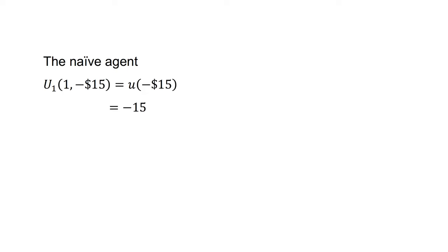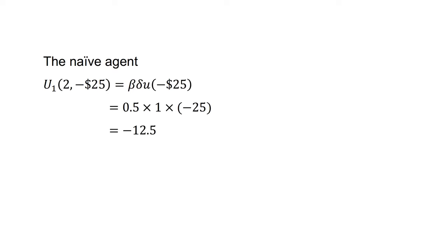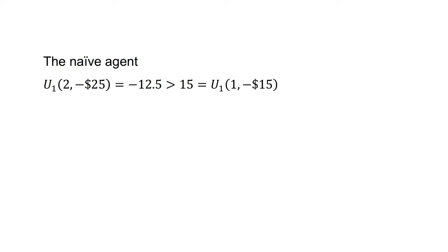A week passes and the naive agent is now at t=1, the time when they were planning to pay the fine. The naive agent reconsiders their decision. The utility at t=1 of paying $15 today equals u(−15) equals −15. The utility of paying $25 next week equals beta*delta*u(−25) equals 0.5 times 1 times −25, which equals −12.5. As the utility of paying $25 next week is greater than the utility of paying $15 today, the naive agent changes their decision and further delays payment — they now choose to pay $25 at t=2. When they reach t=2, they have no choice but to pay the $25.